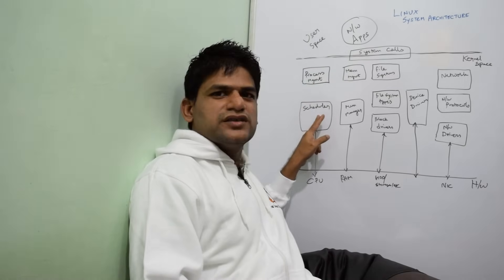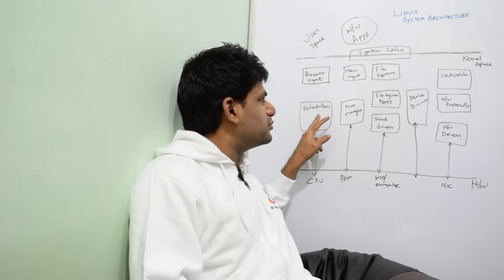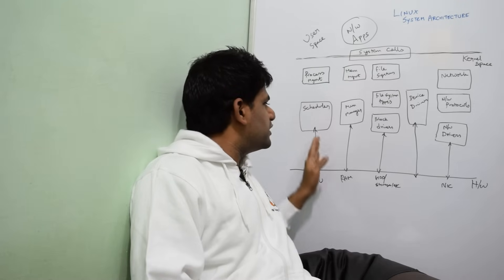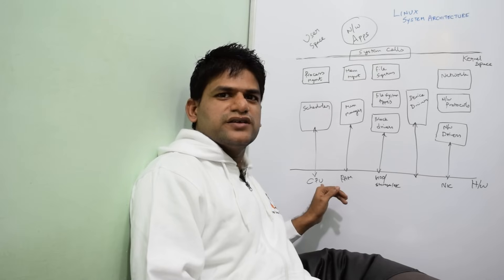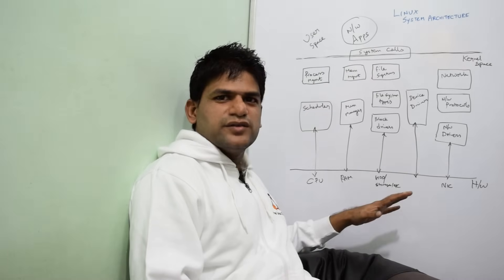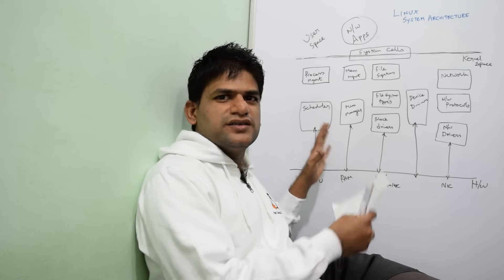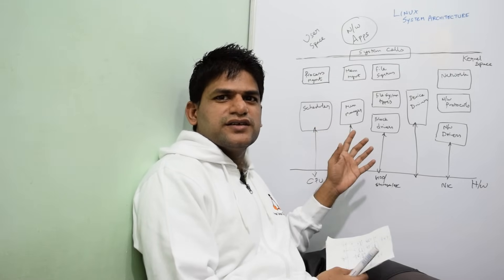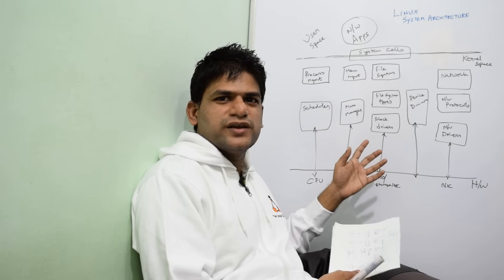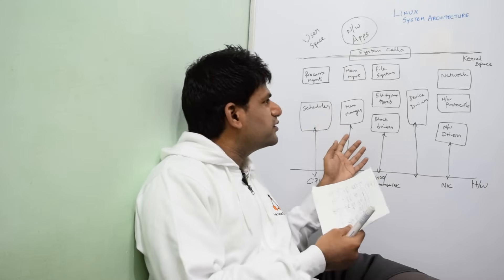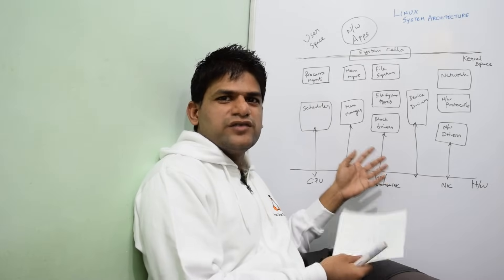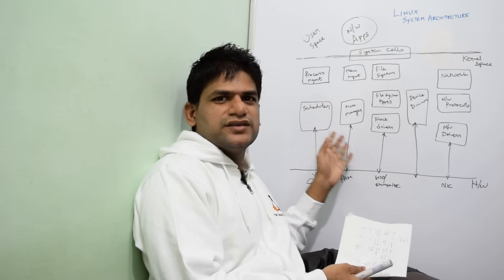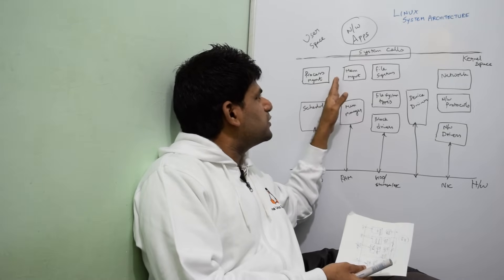Before getting into the network subsystem, I want to show you the entire big picture. It starts with the main process management subsystem, which includes the scheduler and things like that. This is effectively responsible for CPU management. For really understanding this architecture, nothing can match a real source code walkthrough — as I say in most of my videos, you have to go through the Linux kernel source code. There is no substitute for that. This diagram is just a visual representation.